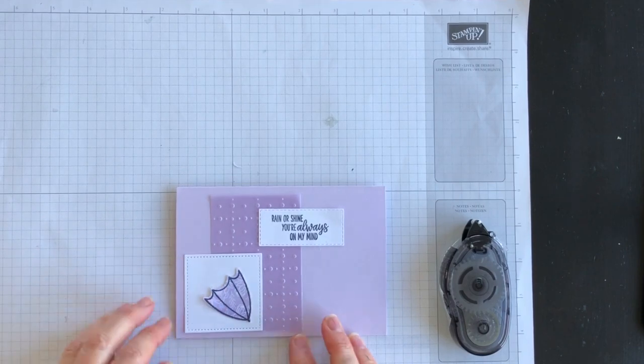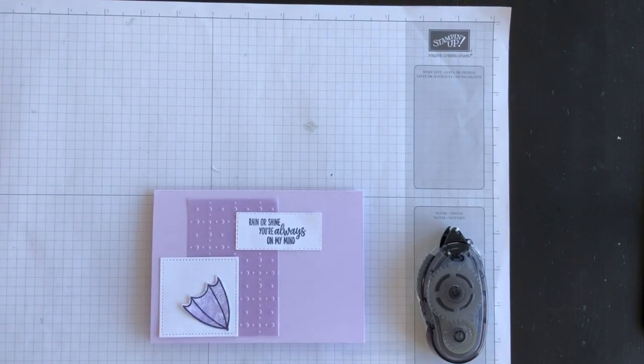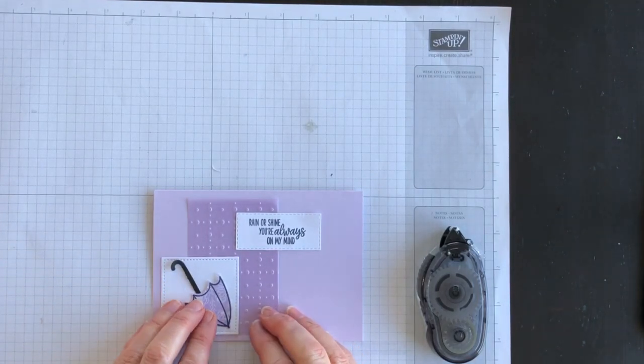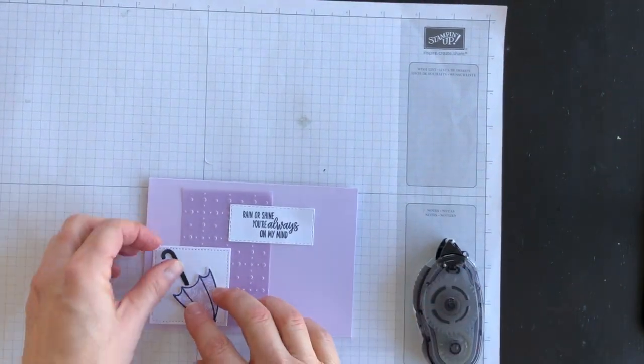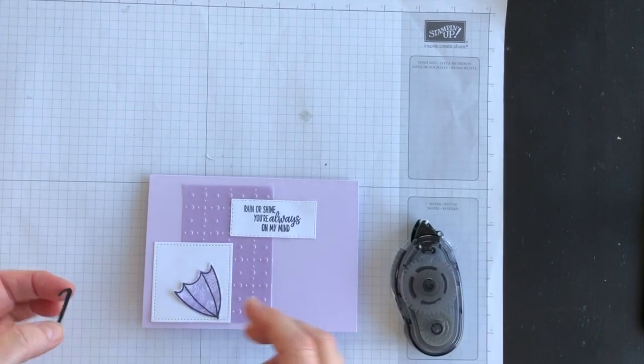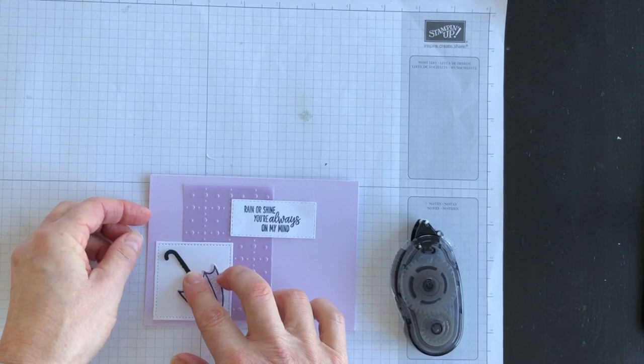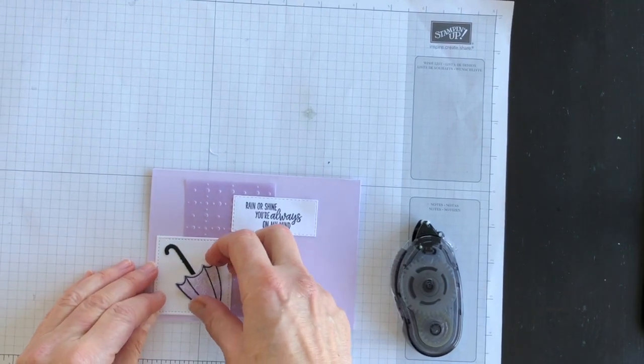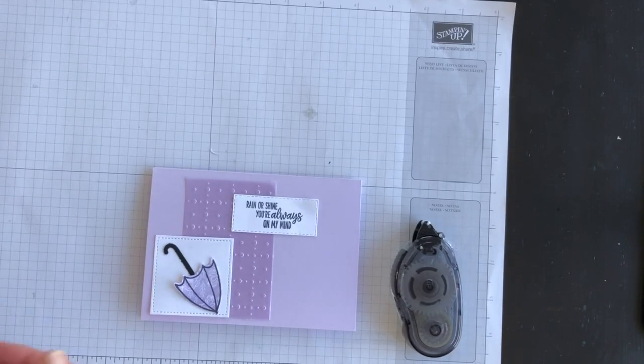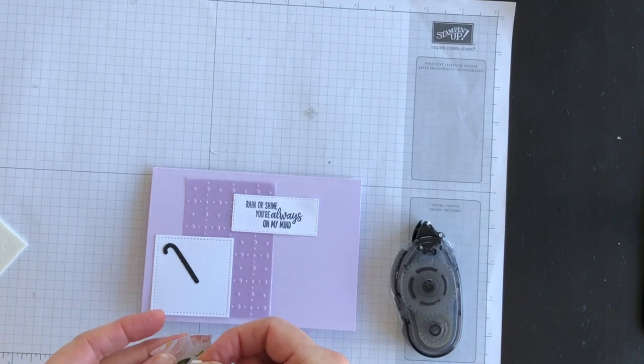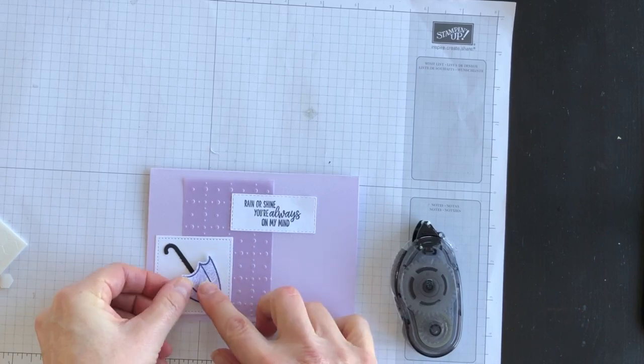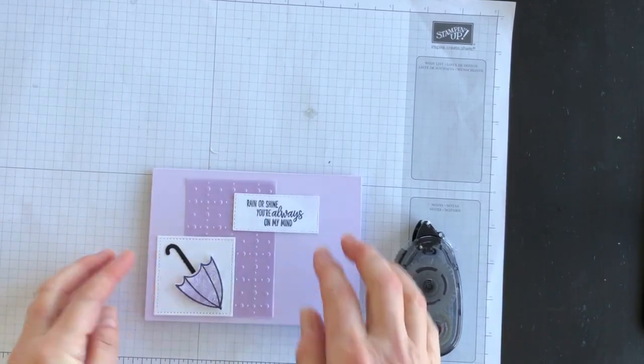All right, so now I'm going to bring in my umbrella, and I've got my little stick. So I want to put my little stick on like that. So I think what I'll do is I'll use snail for the handle of the umbrella. And then I think what I'll do is use a Stampin' Dimensional, which are right here. I'll use a Stampin' Dimensional next. And that'll pop up my umbrella and give it a little bit of pizzazz.